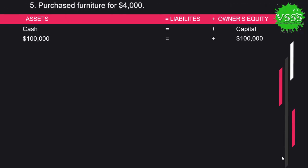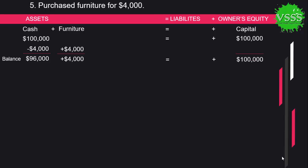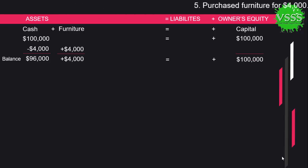The second transaction: he purchased furniture for $4,000. We have opened another account named furniture on the asset side and put the value of $4,000. From the cash account, we deducted $4,000 because we paid this amount for purchasing the furniture. The balance now is: cash $96,000 plus furniture $4,000 equals capital $100,000. Both sides are balanced.